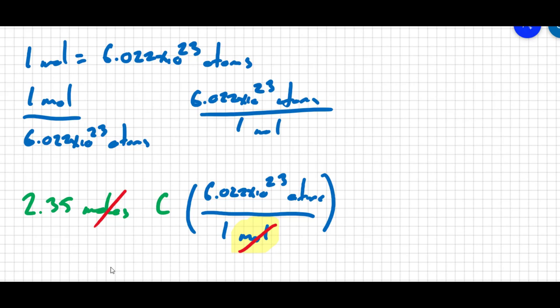And so all you have to do is take 2.35 and multiply it by Avogadro's number. And when you do that, you get 1.415. There's three sig figs in my data, so there should be three sig figs in my answer. So I'm going to say 1.42, then I can't forget the powers of 10, times 10 to the 24 atoms.